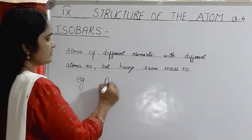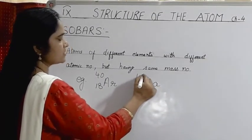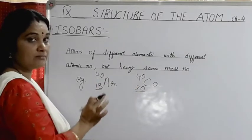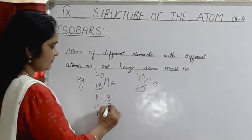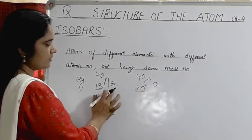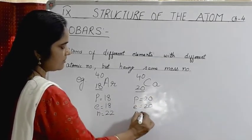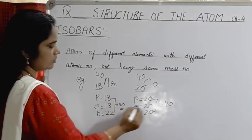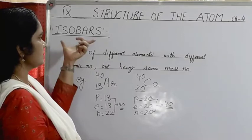An example of isobars: argon (atomic number 18, mass number 40) and calcium (atomic number 20, mass number 40). They have different atomic numbers (18 and 20) but the same mass number (40). For argon: protons = 18, electrons = 18, neutrons = 22 (18 + 22 = 40). For calcium: protons = 20, electrons = 20, neutrons = 20 (20 + 20 = 40). These pairs with the same mass number but different atomic numbers are called isobars.